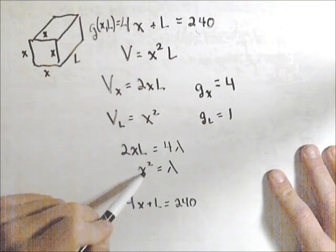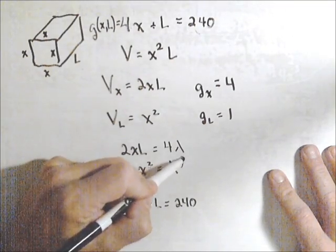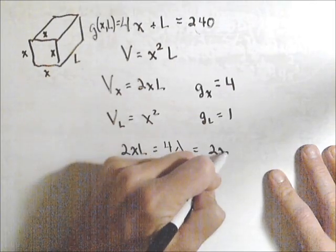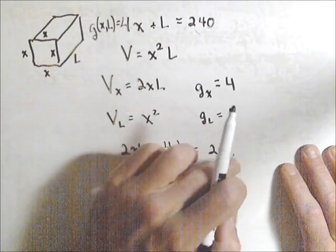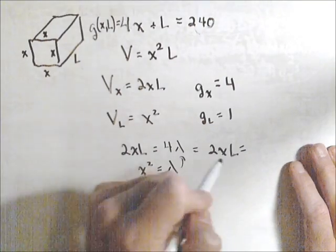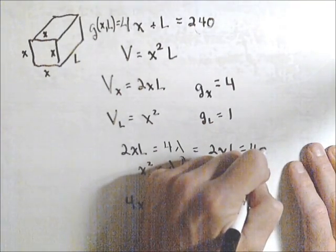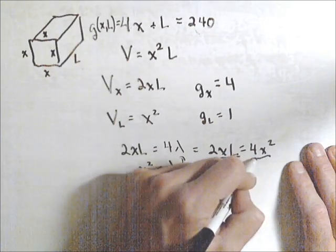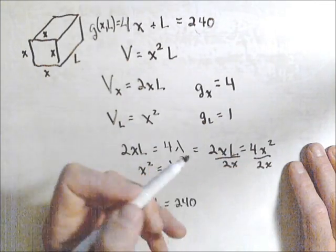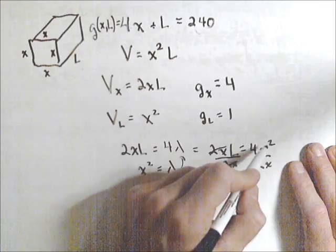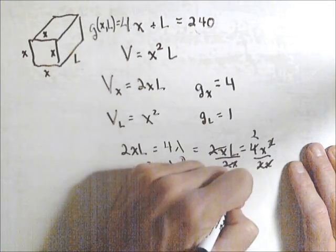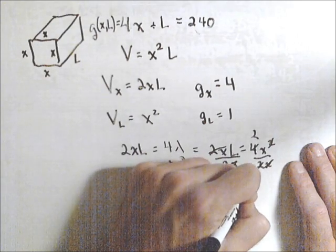A lot of different ways we can solve this, but this guy's already solved for lambda. So let's just plug that in there and see what happens. We have 2xL equals 4x squared. So let's divide both sides by 2x. That does eliminate our answer of 0, but then we wouldn't have a box. So we're not too worried about it. That gets rid of that, and this will become a 2. So what we get is that L equals 2x.